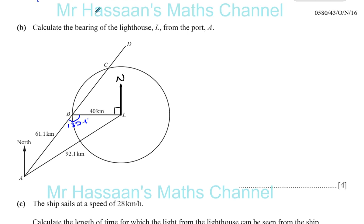It says calculate the bearing of the lighthouse L from the port A. Now the bearing, this already came up in paper 2 bearing, so I doubt that there will be questions in paper 4, but still it's good for us to know in case we're not sure. Bearings are always measured from the north line and always in the clockwise direction. So we need to find what this angle is over here.